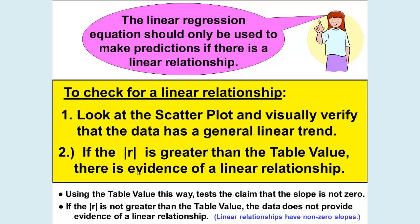If the absolute value of R is not greater than the table value, the data does not provide evidence of a linear relationship. Linear relationships have a non-zero slope.